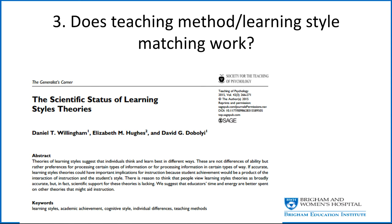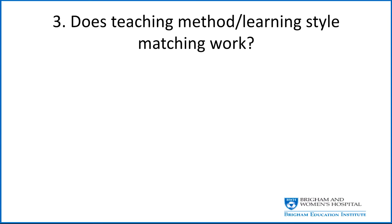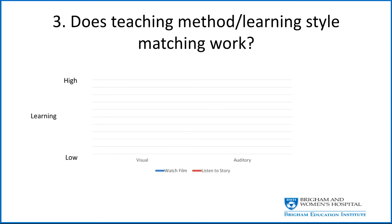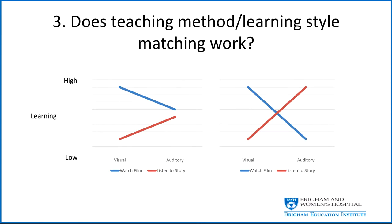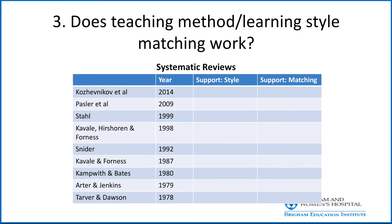In a recent review, Willingham and colleagues asked whether existing data supports the idea of matching. Imagine assessing students as either visual or auditory learners, then using two methods — watching a film and listening to a story — to teach the same thing. You might find that visual learners do better with the film and auditory learners do better with the story. But if everyone still does better with the film, that doesn't justify a curricular change. To justify matching, you'd need to see a crossover pattern. Sadly, several decades of studies suggest neither pattern is actually supported.